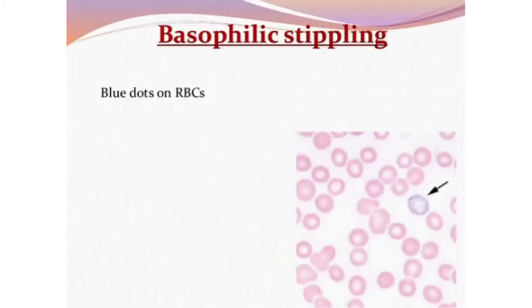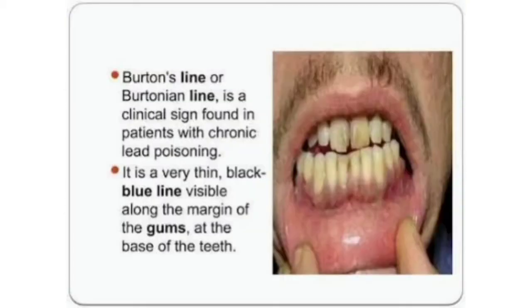Basophilic stippling refers to blue dots seen on red blood cells. Barton's line, also known as the Bartonian line, is a clinical sign found in patients with chronic lead poisoning. It appears as a thin black-blue line visible along the margin of the gums at the base of the teeth.